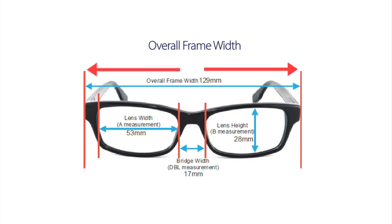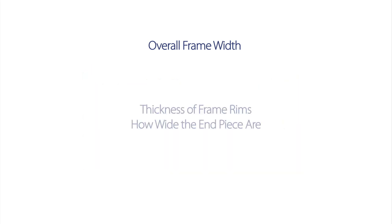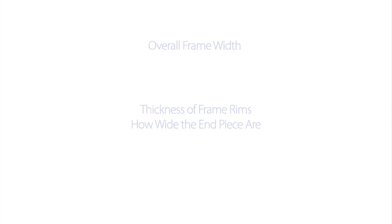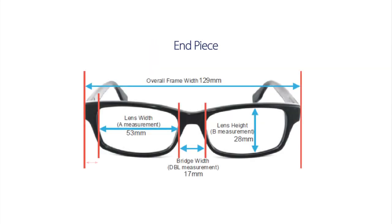The overall frame width is the inside measurement of the frame. The overall width is also dictated by such factors as the thickness of the rims of the frame and how wide the end pieces are. The end piece is the measurement where the lens ends to the outer edge of the frame. This measurement is important for your best overall fit.